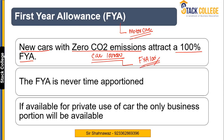After claiming the 100% FYA, there will be no amount left, so there will be no WDA subsequently. As already discussed, on cars there is no AIA. So cars attract either the WDA allowance or First Year Allowance. But First Year Allowance is only for those cars which meet the zero CO2 criteria. Importantly, this First Year Allowance is never time-apportioned due to a short or long accounting period.